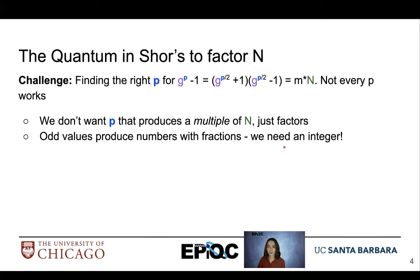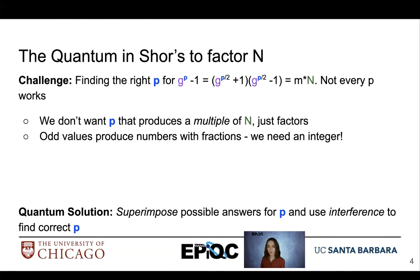So for example, if we had p equal to 1, g to the 1 half could give us a fraction. So this introduces our quantum solution. We will superimpose possible values for p and use interference to find the correct value of p very quickly.